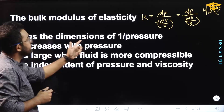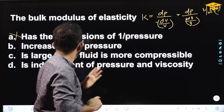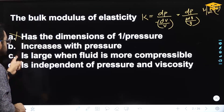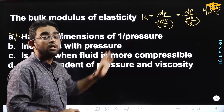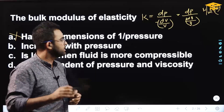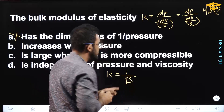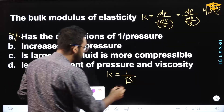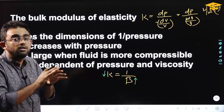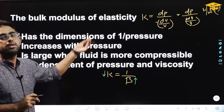First option has dimension of 1/pressure — incorrect. The correct unit is pressure. Option C states it is independent of pressure — that is incorrect because K is dependent on pressure. Also, K = 1/beta where beta is compressibility, so bulk modulus and compressibility are inversely proportional.